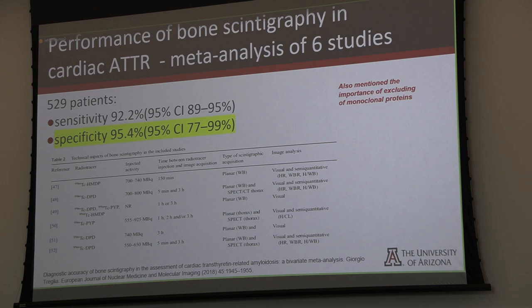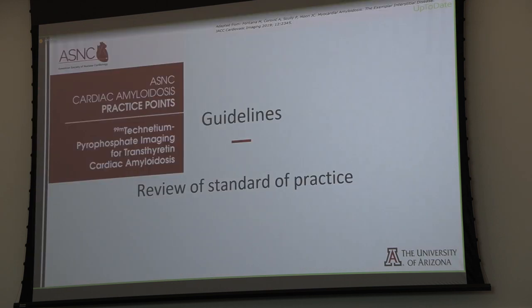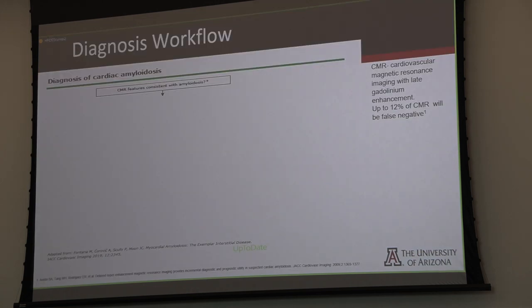A multicenter trial confirmed findings across multiple tracers — though still no MDP, the oncology tracer used in the United States. A variety of studies showed very high specificity and sensitivity. They did note whether monoclonal protein search was used. Going back to the ASNAC guidelines, and also referencing UpToDate, these align with what has been shown across all the presentations.